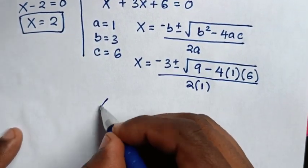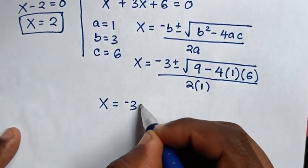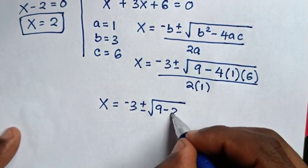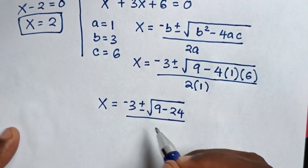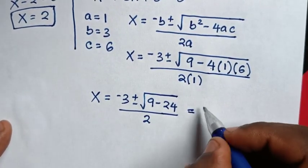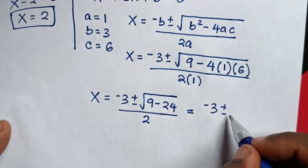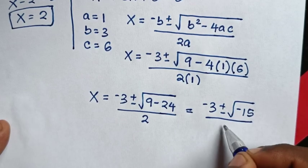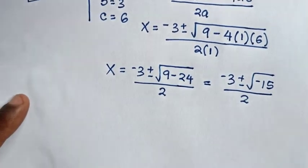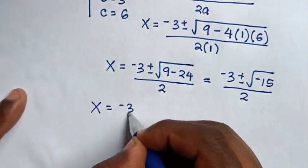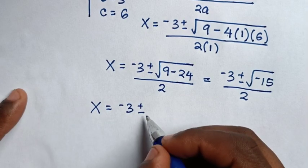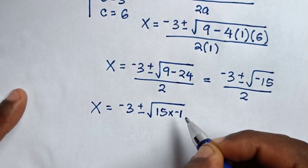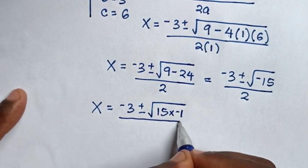Then it will be x = (-3 ± √(9 - 24)) / 2, which equals (-3 ± √(-15)) / 2. We can rewrite √(-15) as √(15 · (-1)), giving x = (-3 ± √15 · √(-1)) / 2.